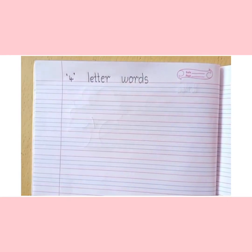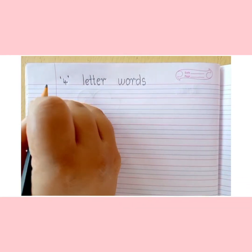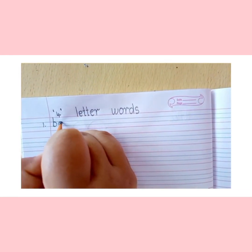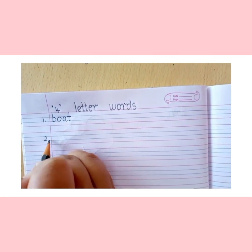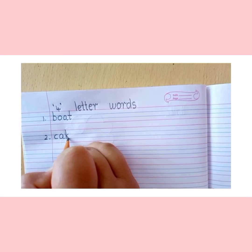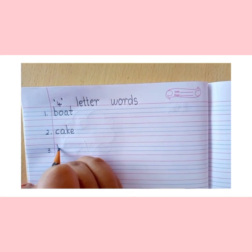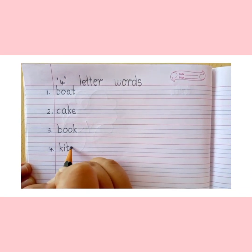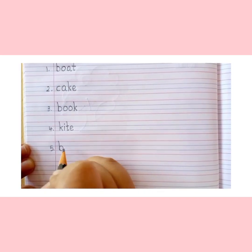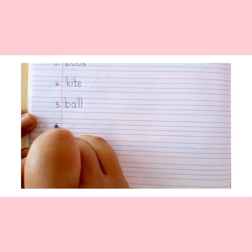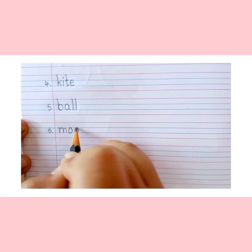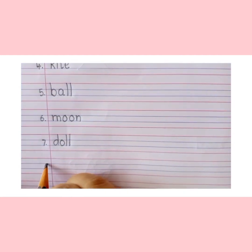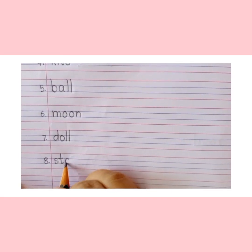Kids, on the new page give the heading: 4 letter words. Now let us start writing. Write number 1 in the margin, put one dot and the first word is B-O-A-T boat, 2 C-A-K-E cake, 3 B-O-O-K book, 4 K-I-T-E kite, 5 B-A-L-L ball, number 6 M-O-O-N moon, number 7 B-O-L-L, number 8 S-T-A-R star.